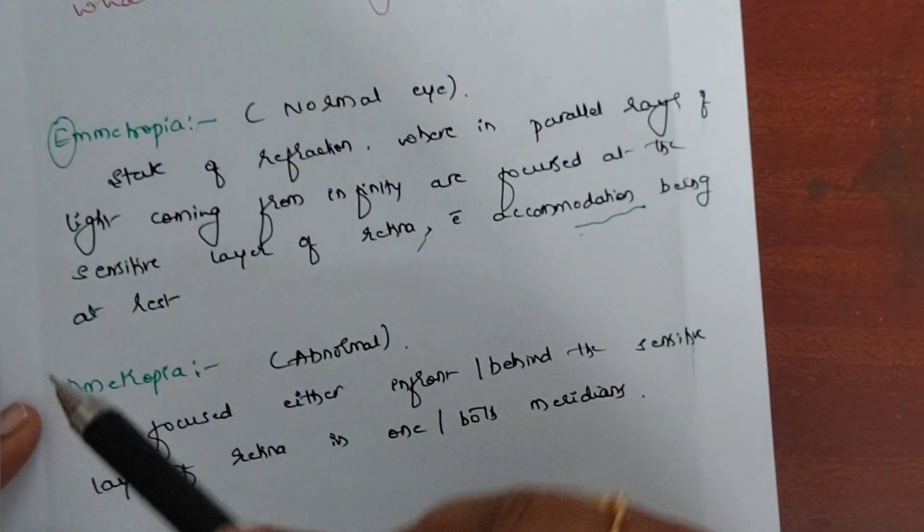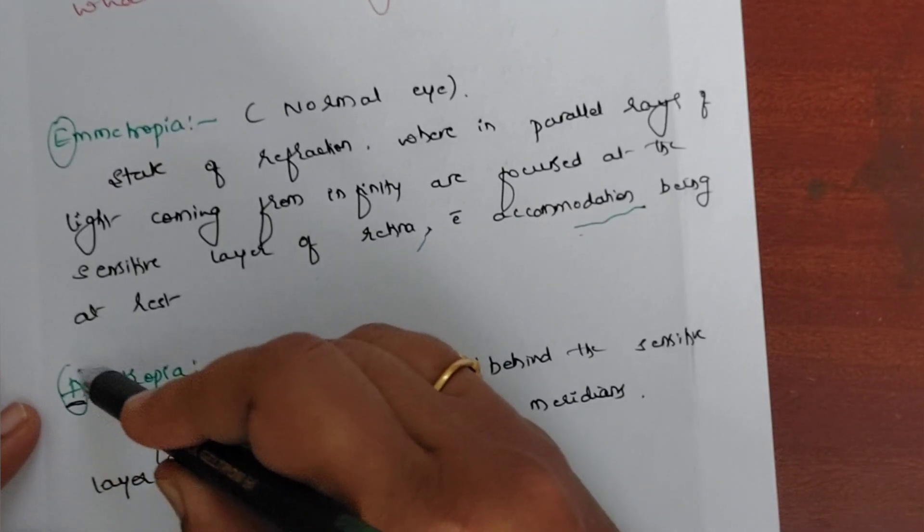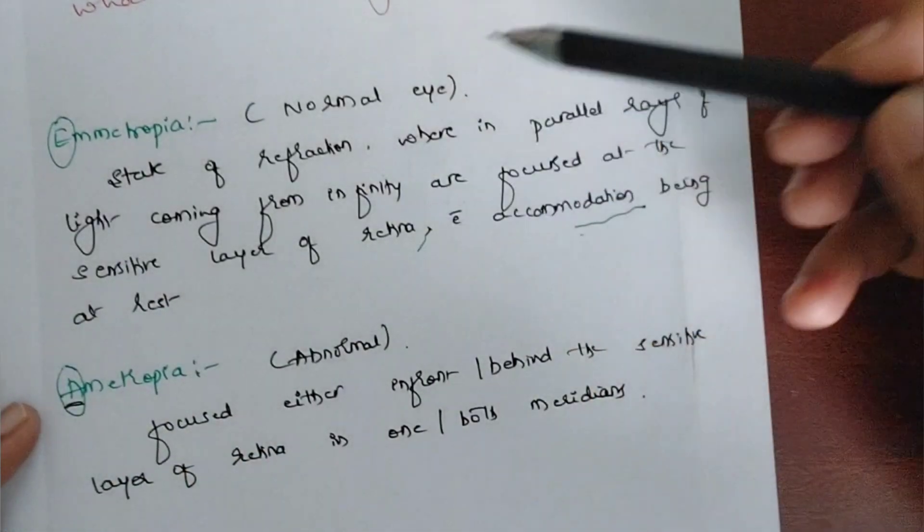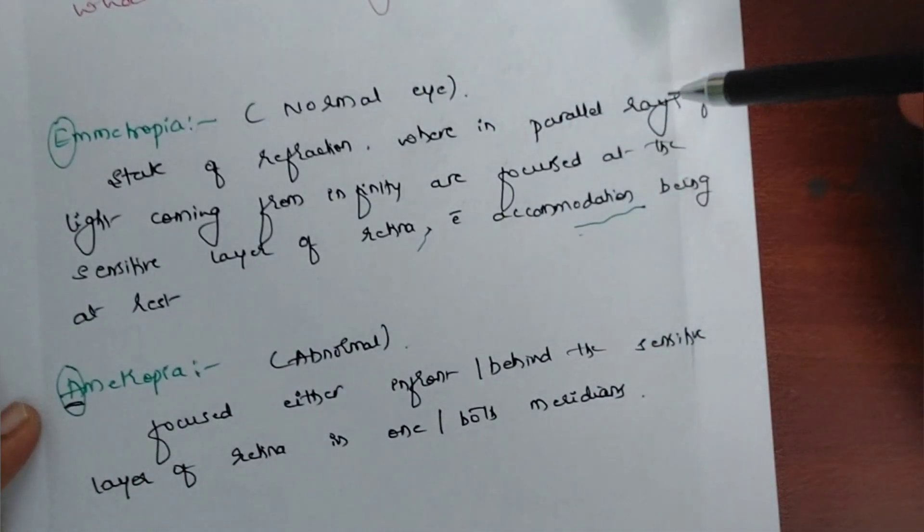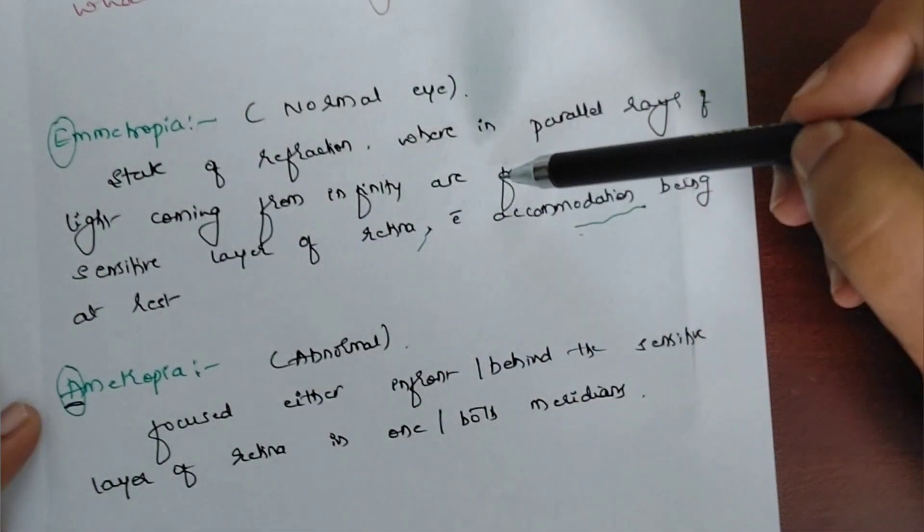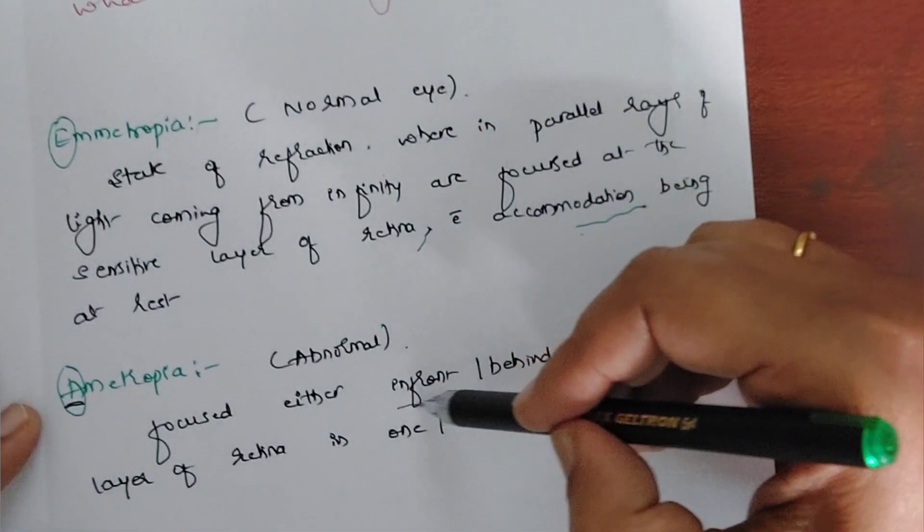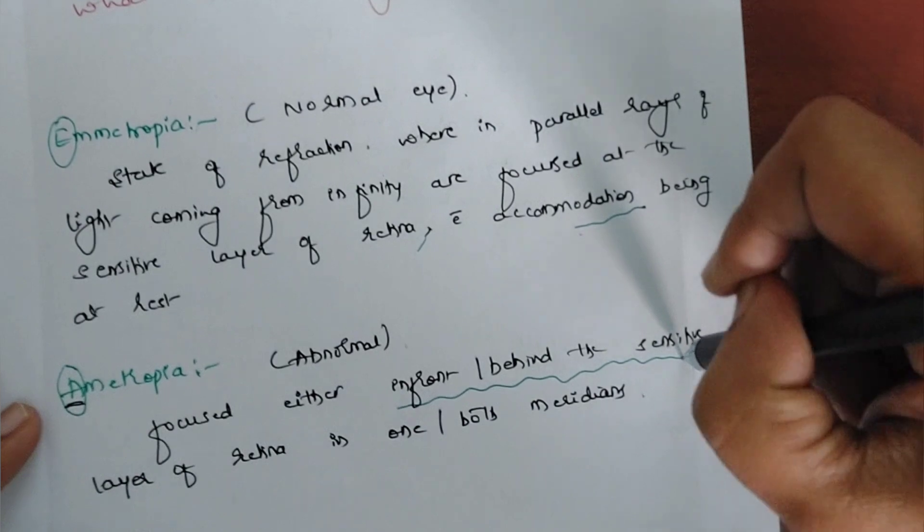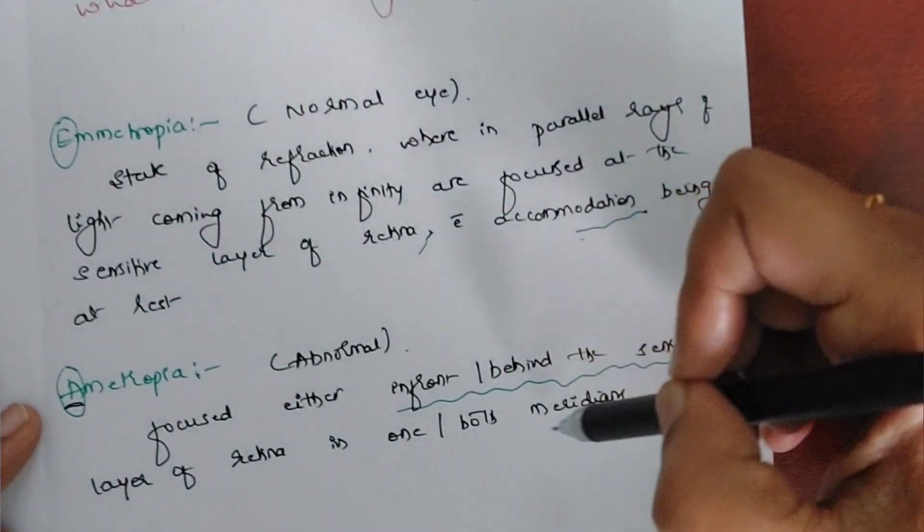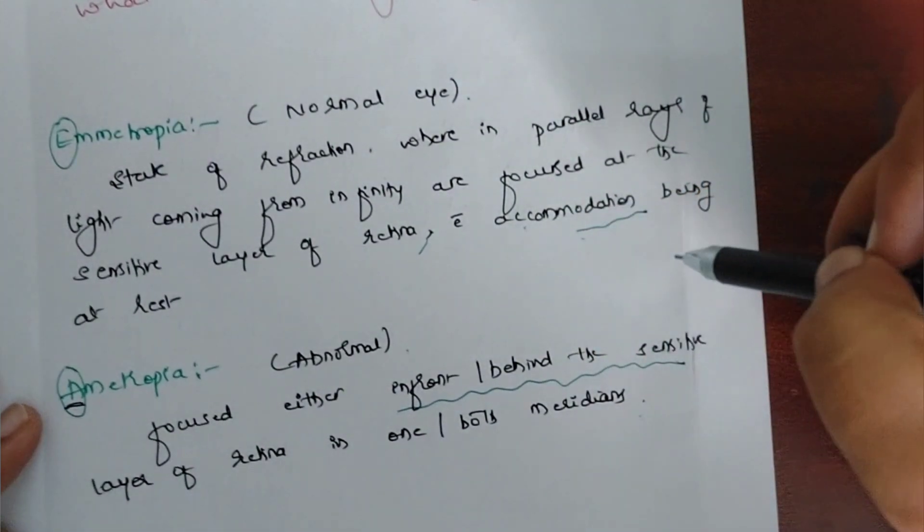If you come to ametropia, as there is A, just remember it is something abnormal. So here the state of refraction wherein parallel rays of light coming from infinity are focused either in front or behind the sensitive layer of retina in one or both the meridians with accommodation being at rest.